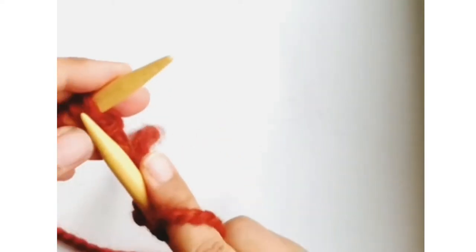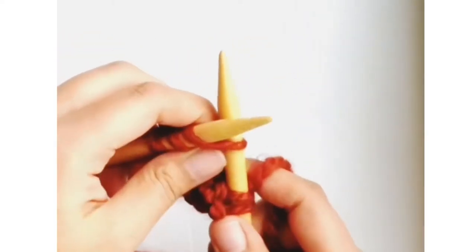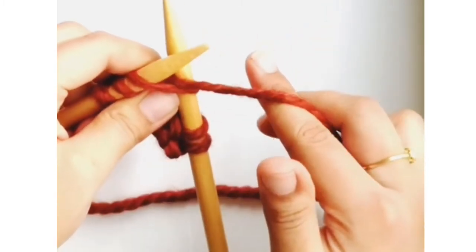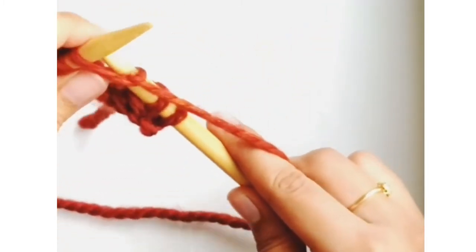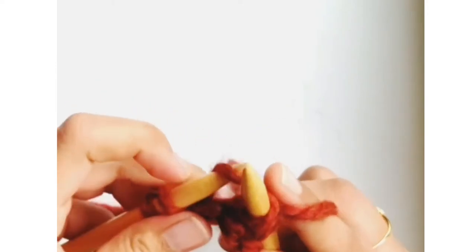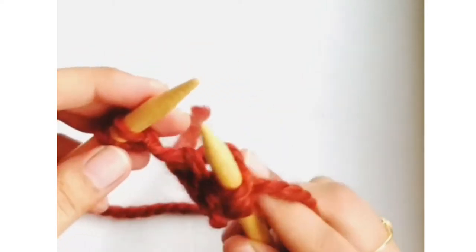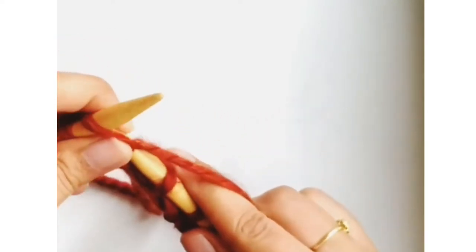So basically what I'm doing is, I'm going in with my right needle into that loop, then pulling my yarn over, and then under the loop like that, and then dropping this stitch off the left needle. So again, like that, dropping it off.